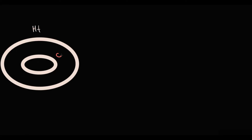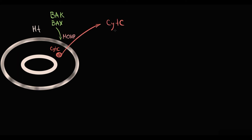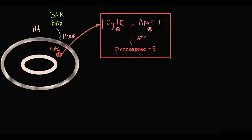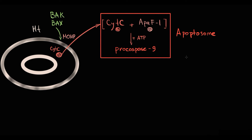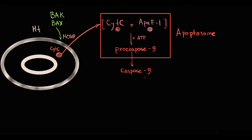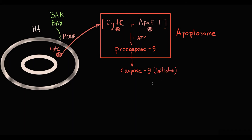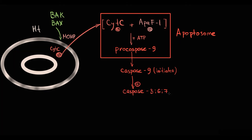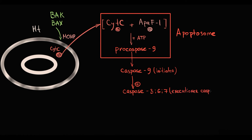To explain this: once cytochrome C is released into the cytosol, it initiates a caspase cascade. Cytochrome C binds to apoptotic protease-activating factor 1, and this complex together with an ATP molecule binds to procaspase-9. This results in formation of a massive protein complex called the apoptosome. In the apoptosome, inactive procaspase-9 is converted to its active form, caspase-9. Caspase-9 is called the initiator caspase because it activates downstream caspases.